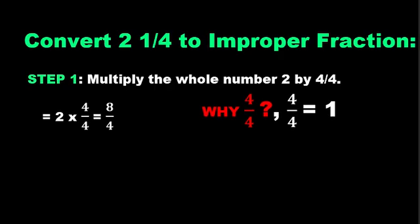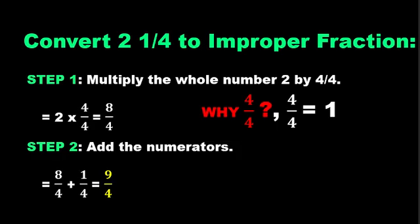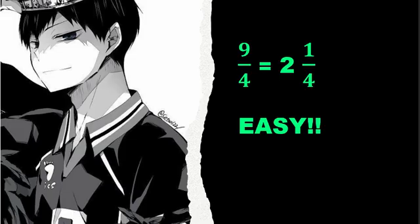Step 2: Since both fractions have the same denominator, we just add the numerators. 8 over 4 plus 1 over 4 is equal to 9 over 4. And that's it! 9 over 4 is the improper fraction form of 2 and 1 fourth.